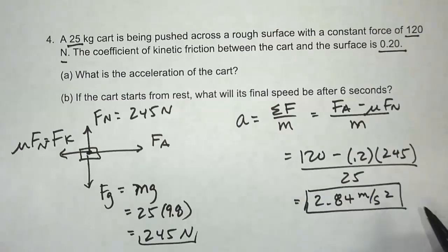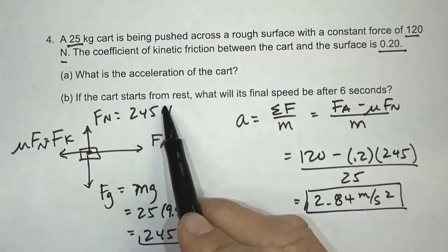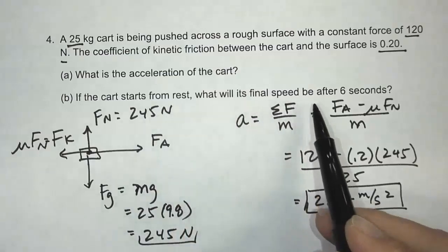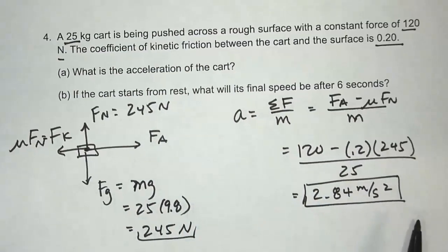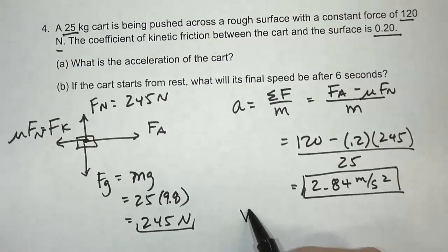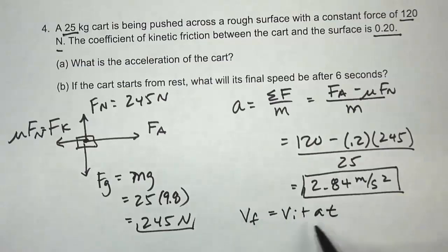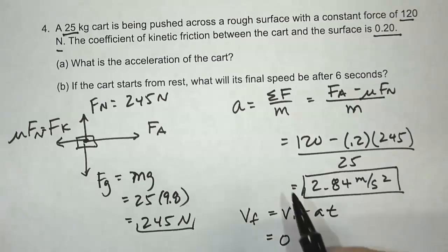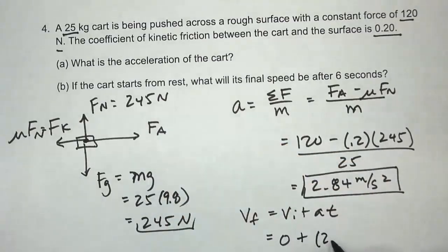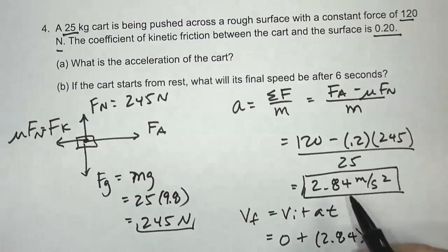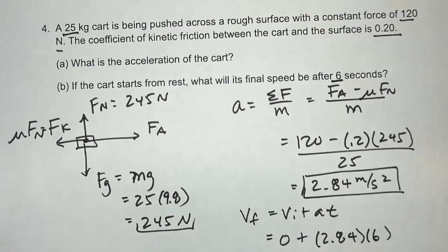That's Part A. For Part B, if the cart starts from rest, what will its final speed be after 6 seconds? This is a kinematic equation: v_final equals v_initial plus a times t. Initial velocity is 0 since it starts from rest, plus 2.84 times 6 seconds gives 17 meters per second.